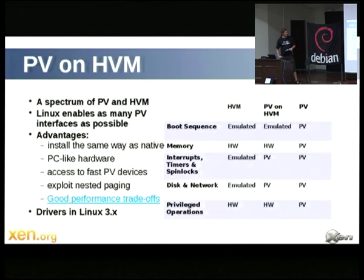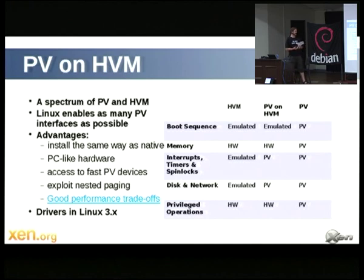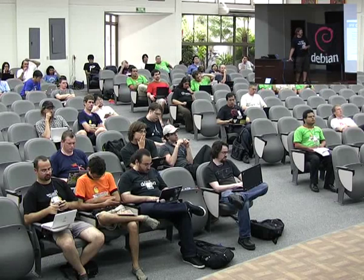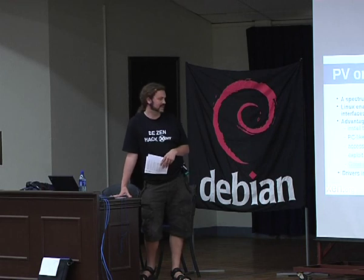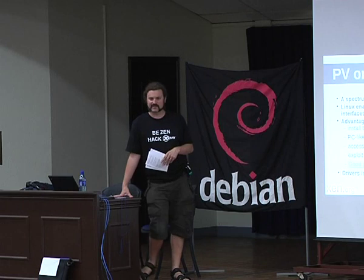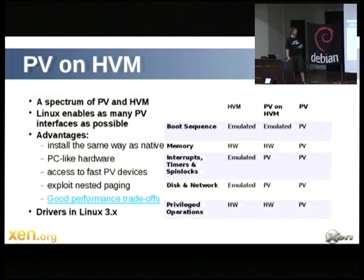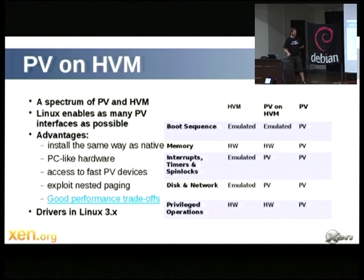There are actually two kinds of domain — that's a bit of a lie. There's a spectrum, and one thing we have is PV on HVM: taking a standard HVM guest and giving it the ability to use several PV interfaces. This gives you the same install experience as native hardware. The main thing you should do is use PV device drivers for your NIC and disk — we're talking gigabits per second instead of megabits per second on your NIC. You can also have PV interrupts to avoid exits to the hypervisor for EOIs, and PV spin locks so you're not spinning waiting for a CPU that isn't running.